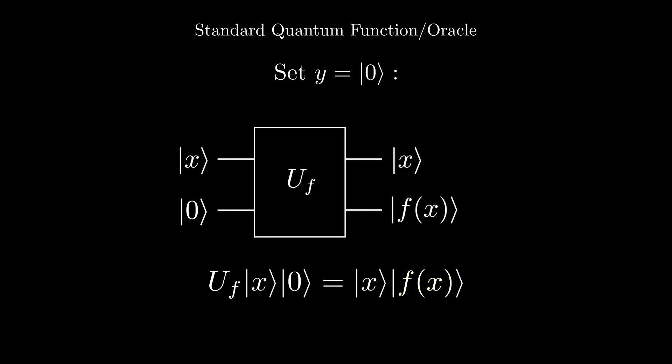On a quantum computer we can encode functions within a unitary matrix and so it is a valid quantum gate. We usually denote a function f as U sub f. So overall, if we apply a function f to the state x zero, we get the state x f of x. Then to get the function output we can measure the second register of qubits.